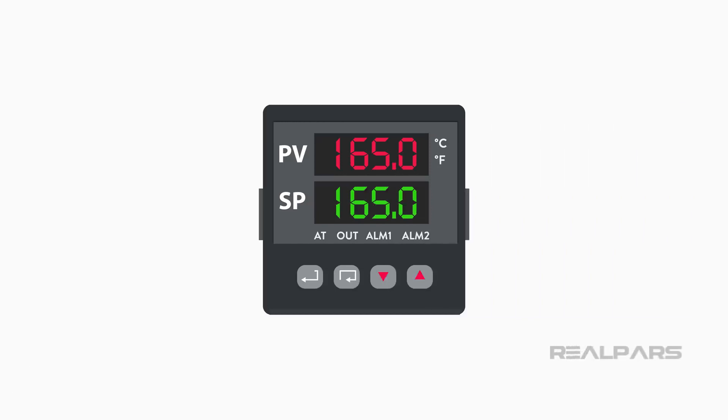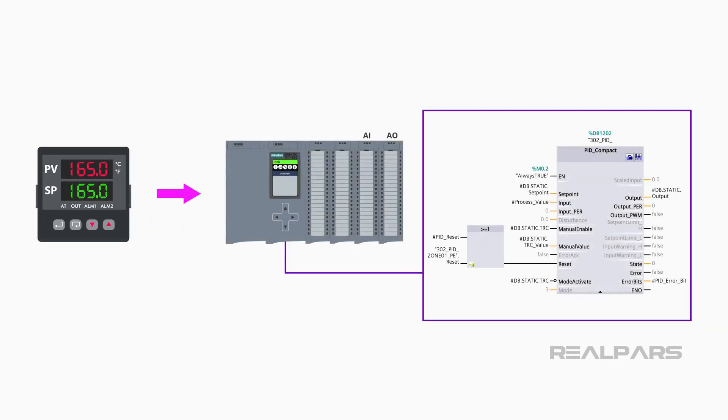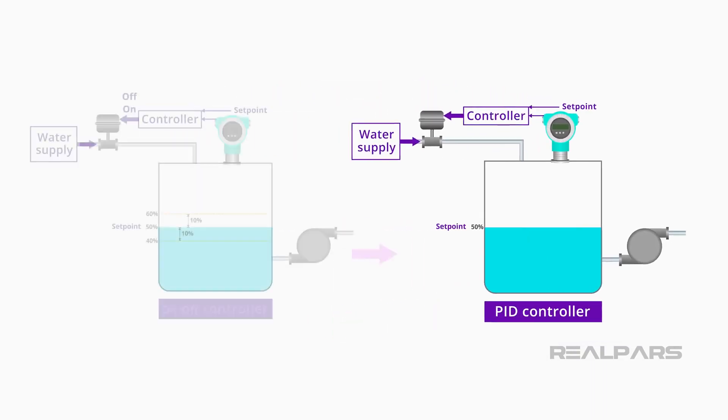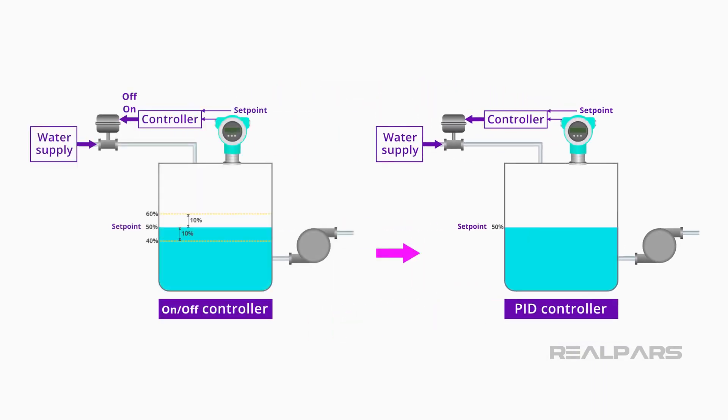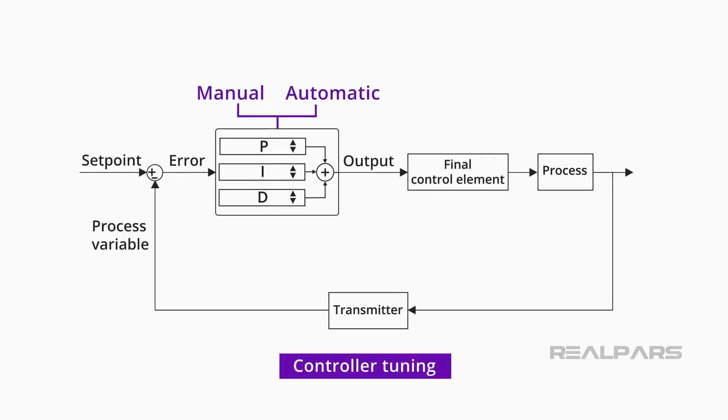In this video, we are going to talk about the PID controller and its transformation from a single station device to what it has evolved into today. We are going to explain why PID controllers are used in industrial processes instead of simple on-off controllers. We will illustrate how controller settings called proportional, integral, and derivative affect different processes under control. We will also provide an overview of the very important activity called controller tuning.